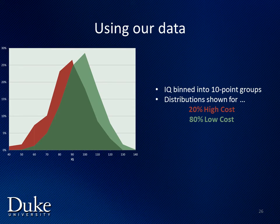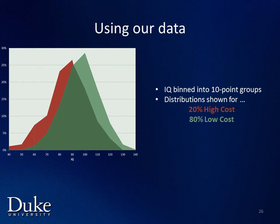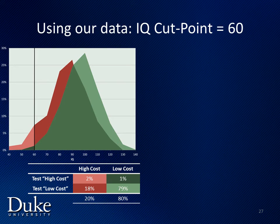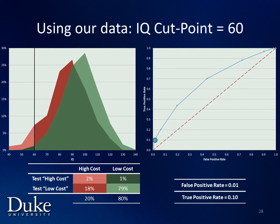Now I'll quickly run through some of our real data. I've graphed bimodal IQ distributions for one of our high cost, low cost distinctions. High cost individuals are shown in the red distribution. If we were to use IQ equals 60 as our cut point, 2% of our overall sample would be true positives, 1% would be false positives, 18% would be false negatives, and 79% would be true negatives. This translates into a false positive rate of 0.01 and a true positive rate of 0.1, and to this point on the ROC curve.